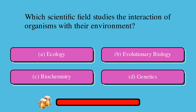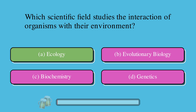Which scientific field studies the interaction of organisms with their environment? A. Ecology, B. Evolutionary biology, C. Biochemistry, or D. Genetics? The correct answer is A. Ecology.